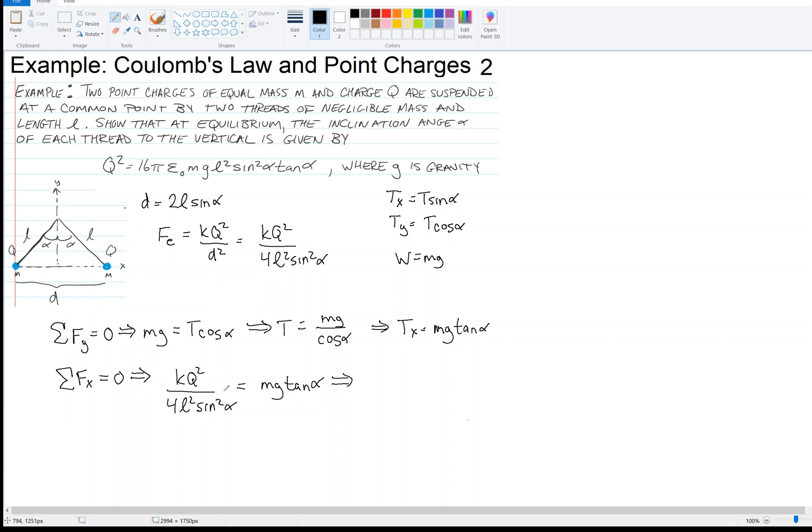If I try to get my relationship in the form of the original problem statement, then I can solve this for Q². I get 4MGL² sine² alpha tangent alpha over K.